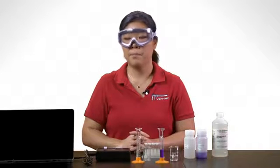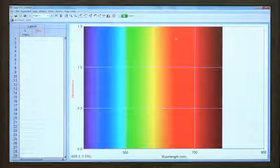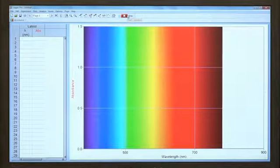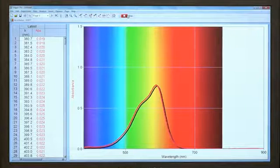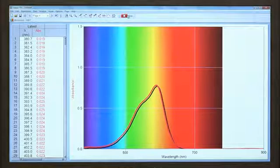Start the data collection by tapping on the green arrow or collect button. You will see a graph of data. Stop data collection.